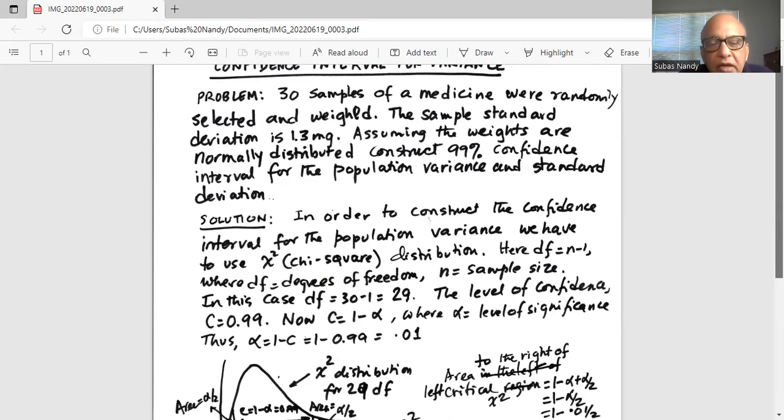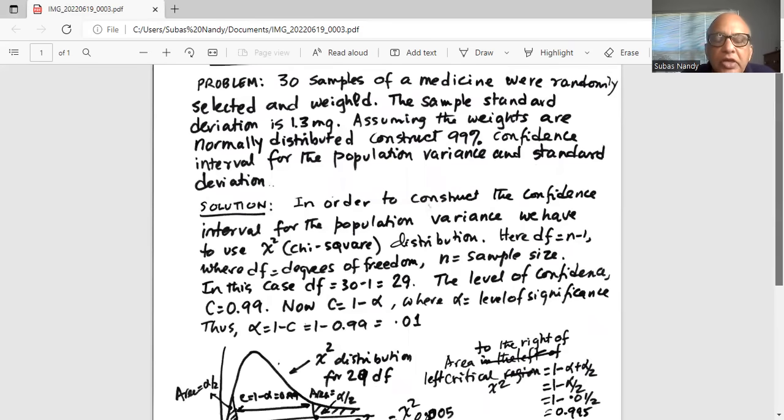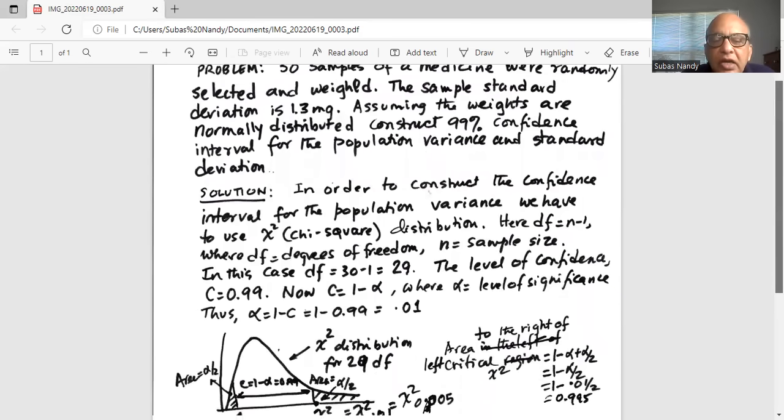In this case, degrees of freedom with sample size of 30 is 30 minus 1 equal to 29. The level of confidence is c equal to 0.99.